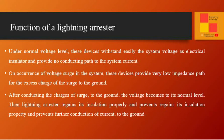Under normal voltage levels, these devices easily withstand the system voltage as electrical insulators and provide no conducting path to the system current. On occurrence of a voltage surge in the system, these devices provide a very low impedance path for the excess charge of the surge to the ground. After conducting the charges of the surge to the ground, the voltage returns to its normal level. Then the lightning arrestor regains its insulation property and prevents further conduction of current to the ground.